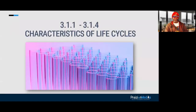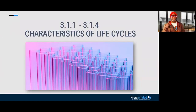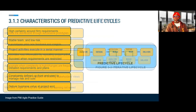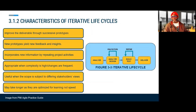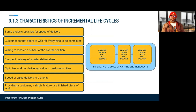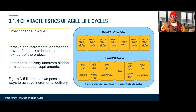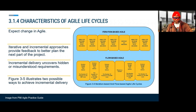Going into chapter three: predictive life cycles are done linearly; iterative life cycles have feedback loops where we repeat until correct; incremental life cycles have varying sizes of increments. There are two types of Agile life cycles — iteration-based Agile, where the cadence makes all iterations the same size, and flow-based Agile, where iterations are of different lengths and different cadences.